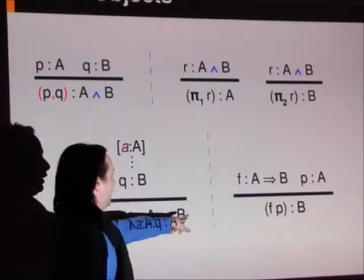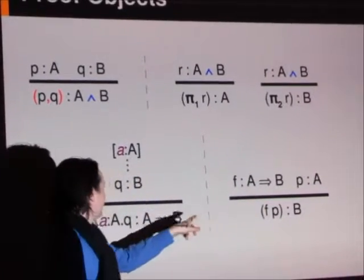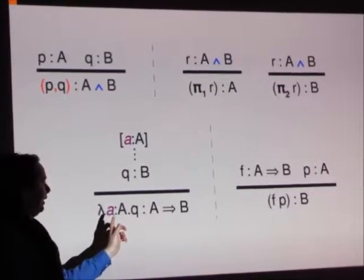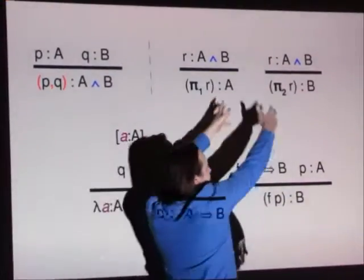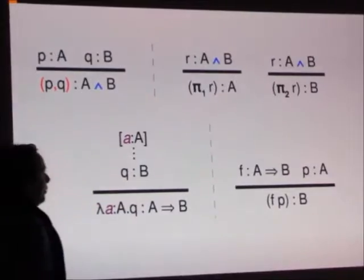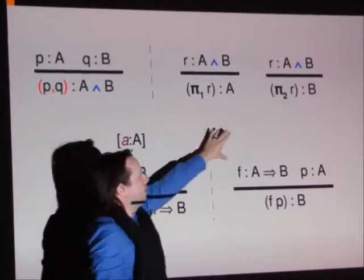All right, so here we have the case where we're doing implication introduction followed by elimination. So we have this sort of tree over here, which has deduced a implies b. It looks like something like this up here.